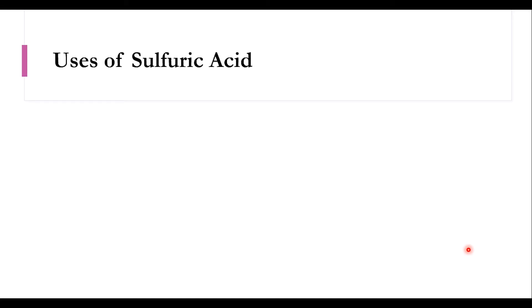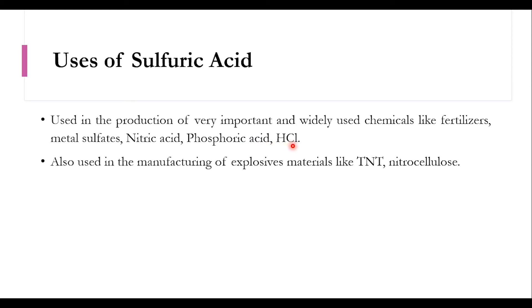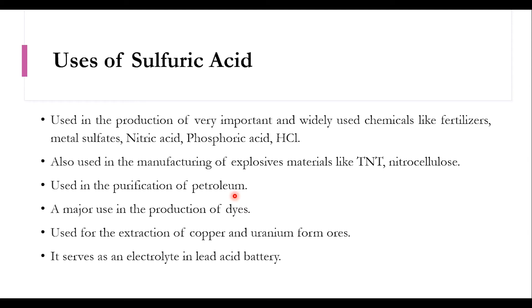Sulfuric acid is used in the production of important chemicals like fertilizers, metal sulfates, nitric acid, phosphoric acid, and HCl. It is also widely used in the production of explosive materials like TNT (trinitrotoluene) and nitrocellulose, in the purification of petroleum, in the production of dyes, for the extraction of copper and uranium from ores, and it serves as an electrolyte in lead-acid batteries.